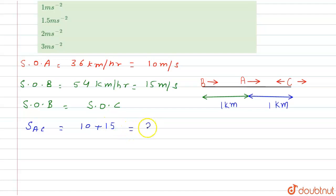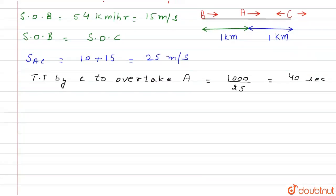Next, the time taken by C to overtake A is 1000 divided by 25, which equals 40 seconds.